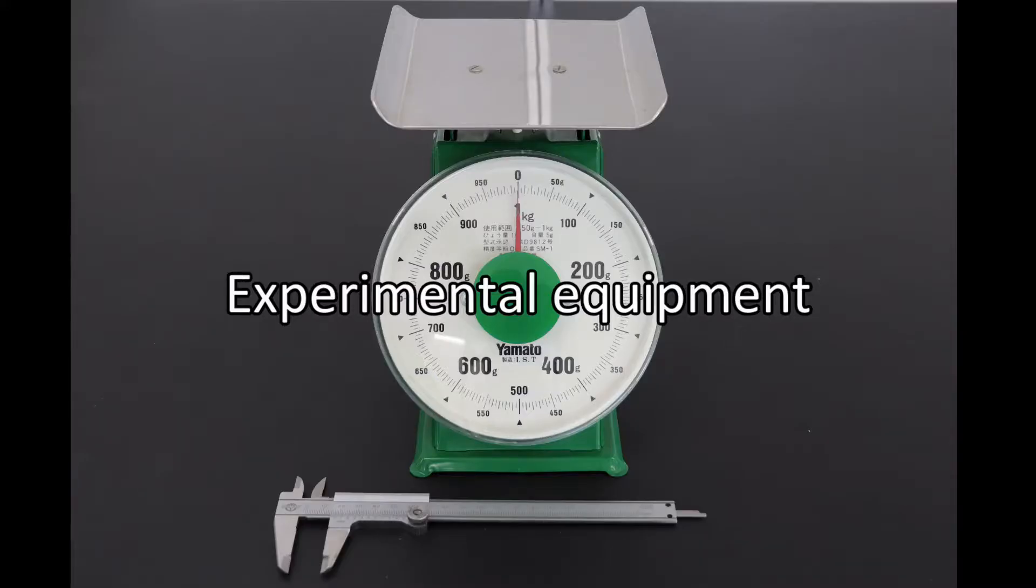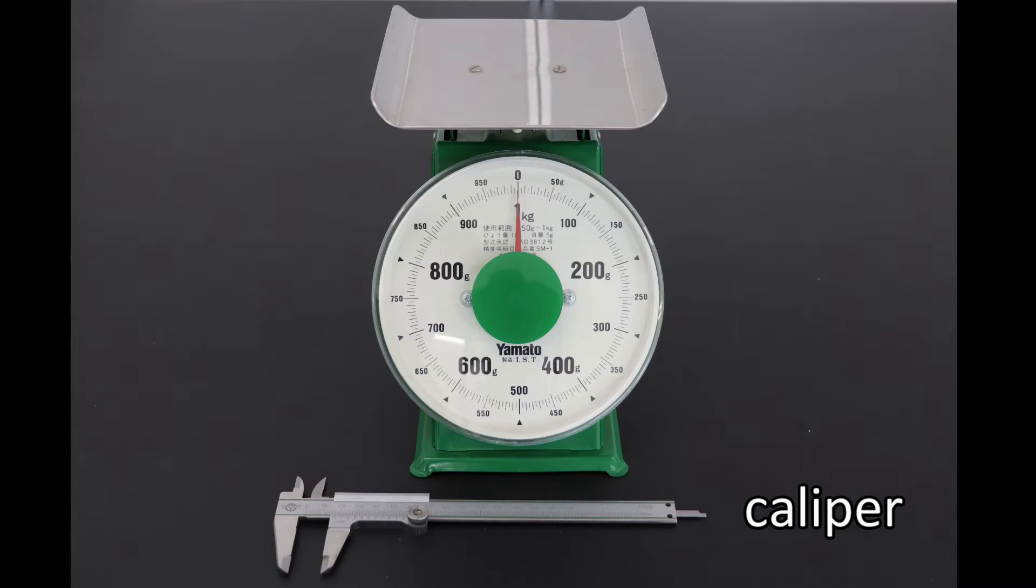The two tools shown in this photo are used to measure the experiment. The one in the foreground is a caliper, and the one behind it is a top plate scale.